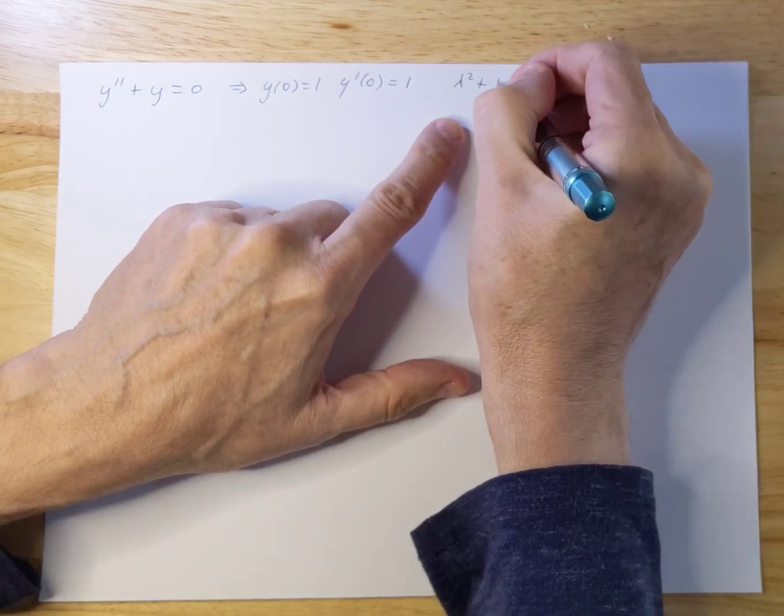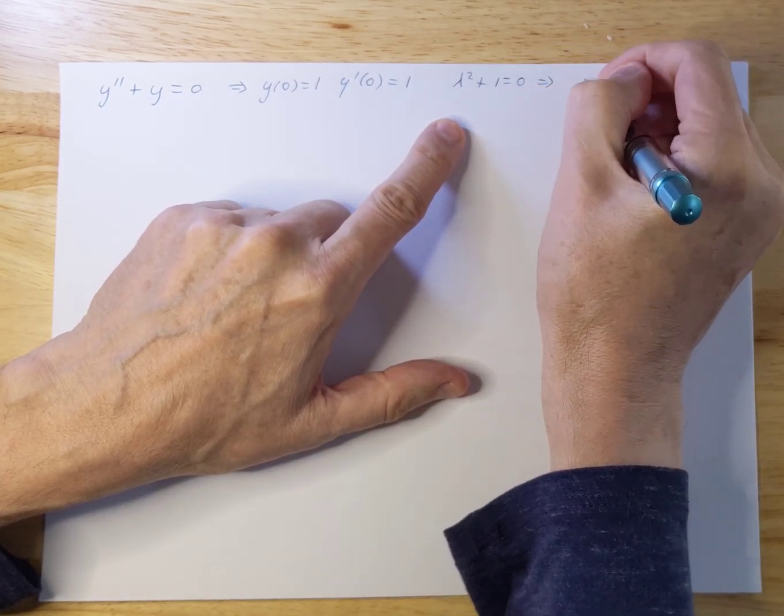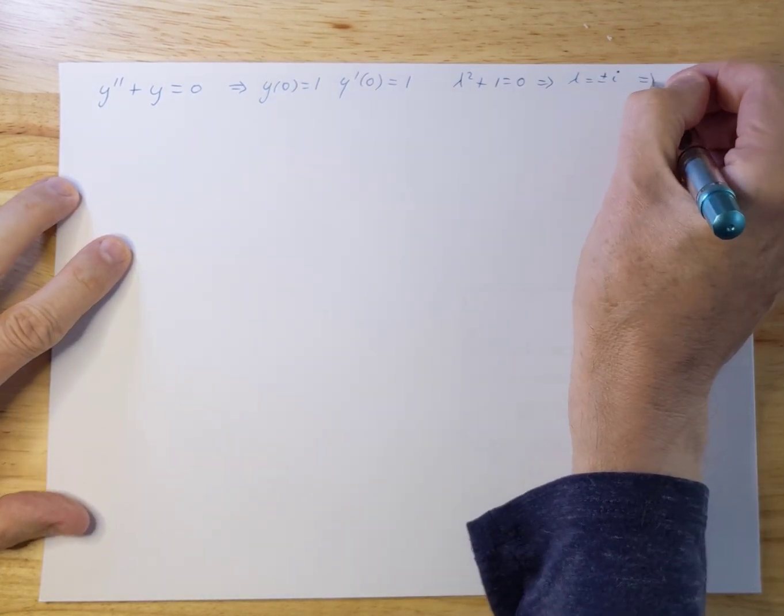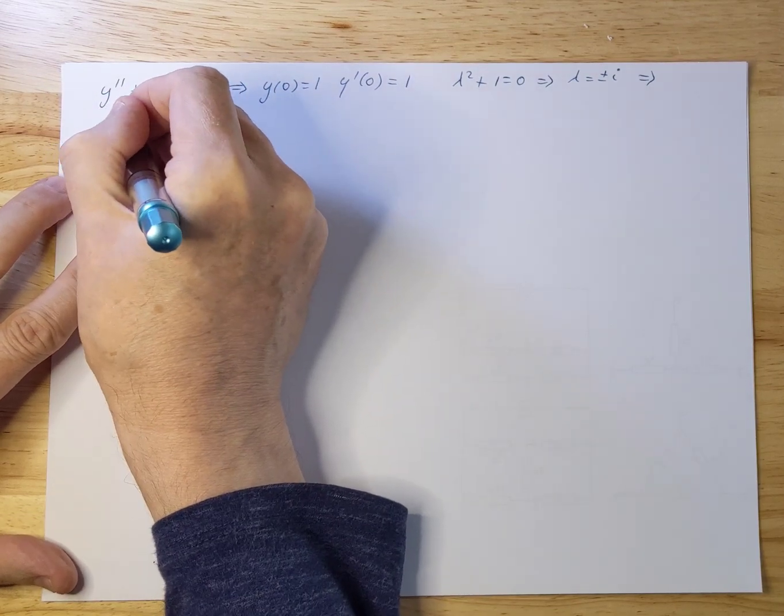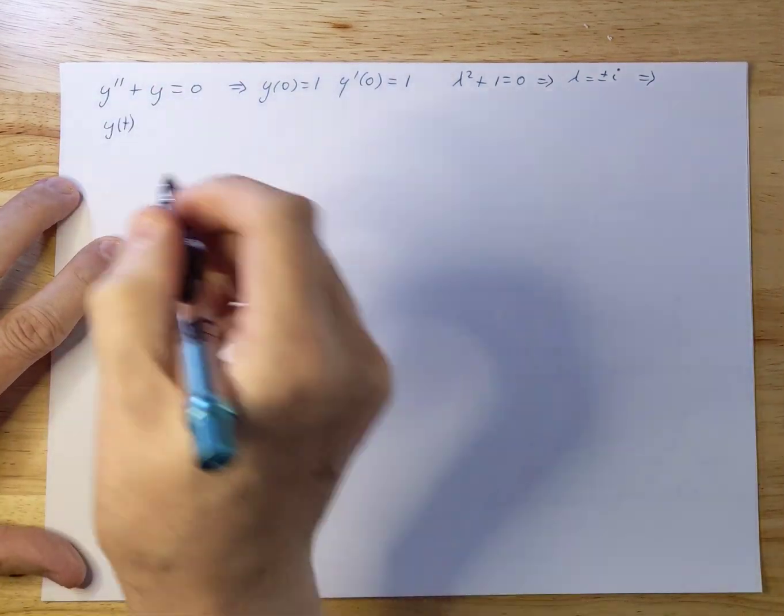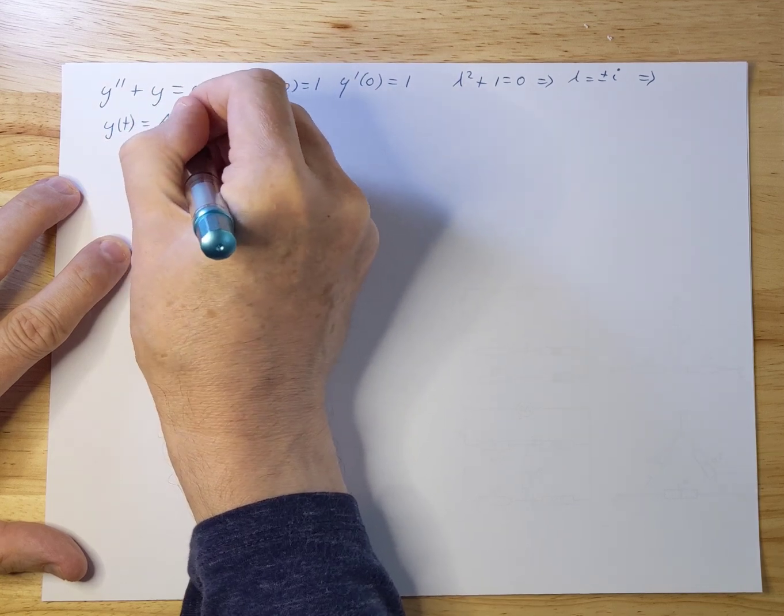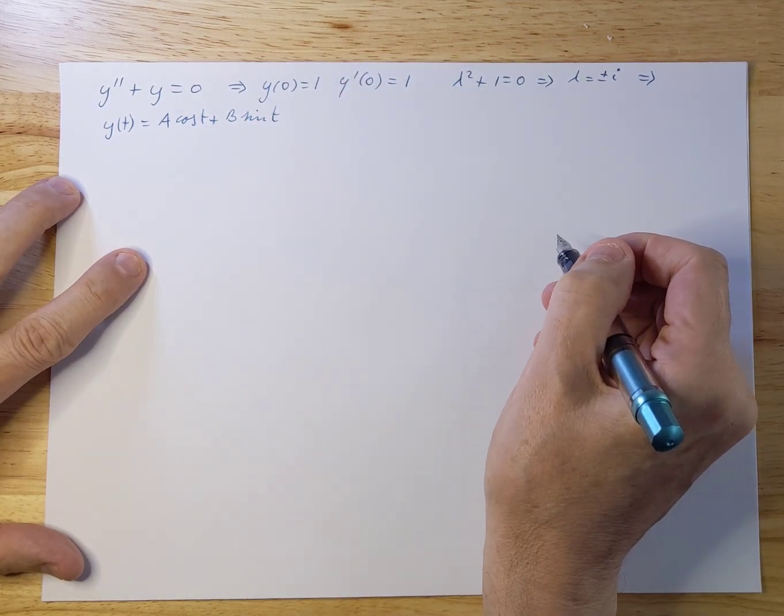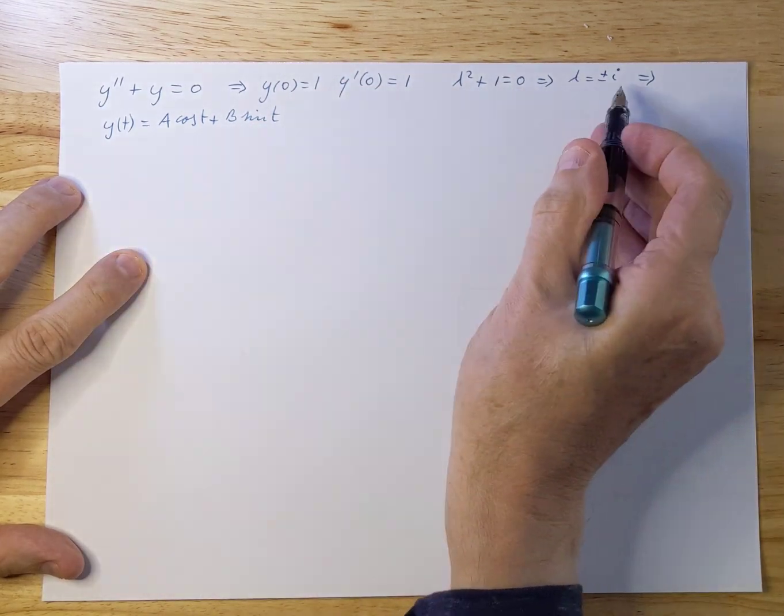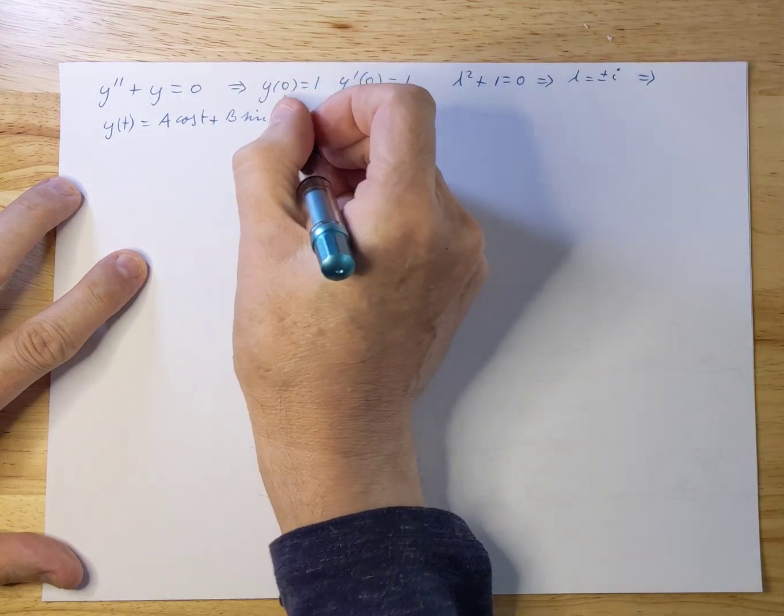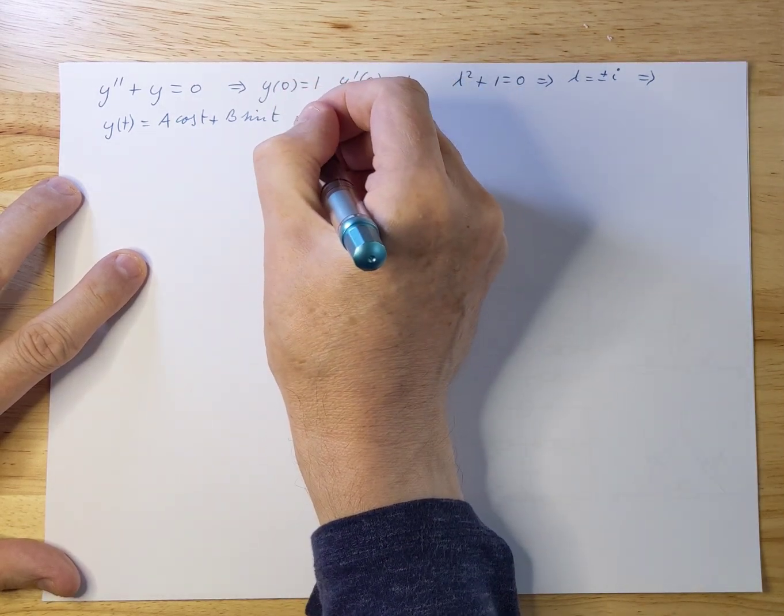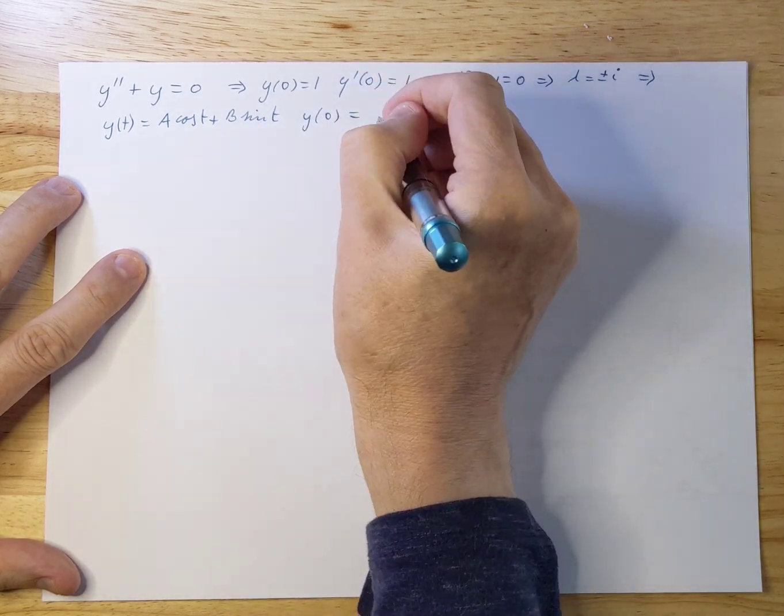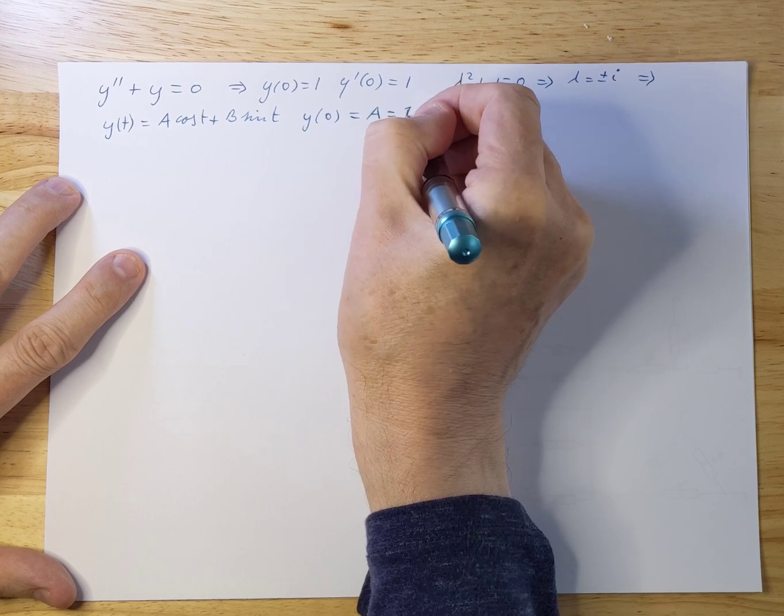We're going to solve this. We can solve this very simply by the characteristic equation which gives you lambda plus or minus i. And that gives you then a generic solution y, we assume it's dependent on time, y(t) is a cos(t) plus b sin(t). That is the generic solution based on the lambdas here. Now we're going to fill in the boundary conditions. So if we do y(0) we expect to get 1 out of it and that means immediately that a equals 1.